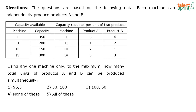The next question asks: using any one machine only to the maximum, how many total units of products A and B can be produced simultaneously? For this question, I should consider any one machine and based on the options check how many maximum products A and B I can produce. I have to use the machine to full capacity and find how many total units of A and B can be produced simultaneously.